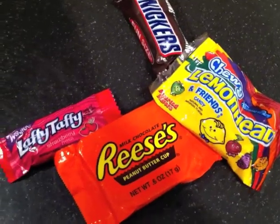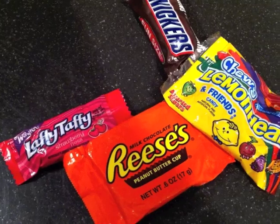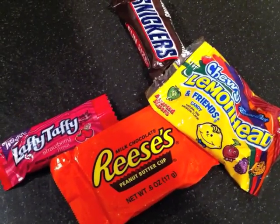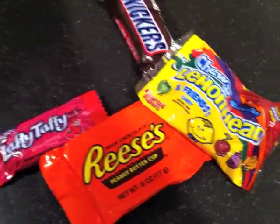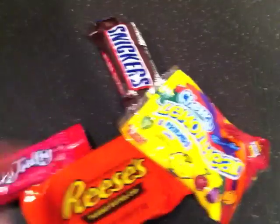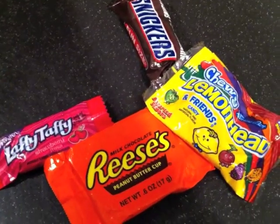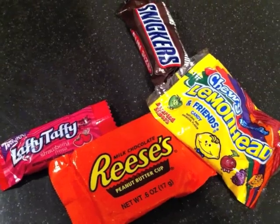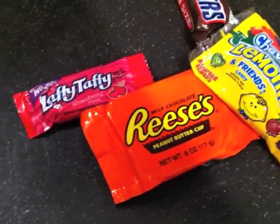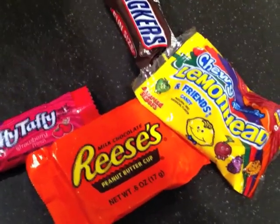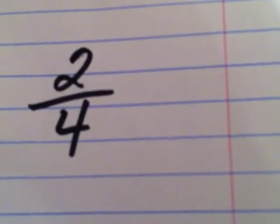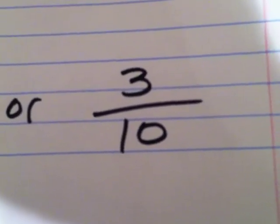Now a second friend comes over and she is going to pick a piece of candy. The chances of her picking chocolate has now dropped from three to five down to two to four, because there are only two pieces of chocolate left. To find the probability of these two dependent events, I multiply the two fractions: three-fifths times two-fourths. That gives me six over twenty, or reduced, a three in ten chance of picking chocolate the first time and then picking chocolate again the second time.